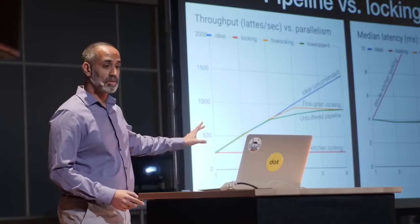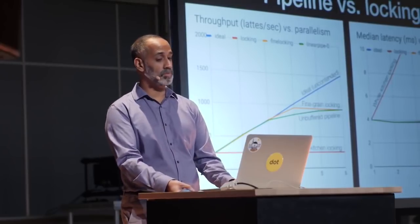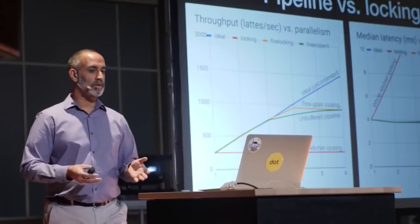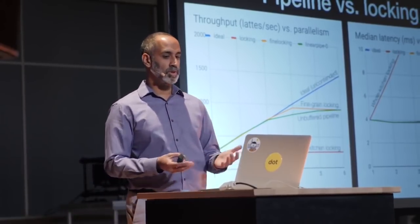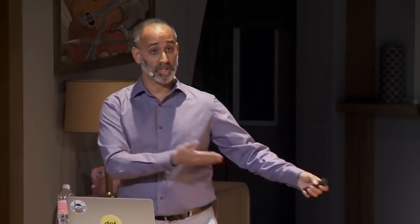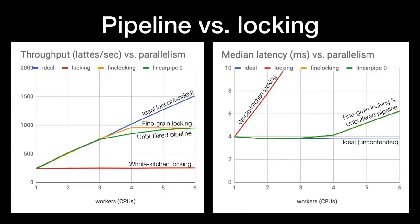Here's the real-world analogy. Consider what happens when the person using the grinder finishes grinding the beans. In the locking implementation, that person steps away from the grinder and someone else can start using it immediately. But in the pipeline implementation, the person grinding the beans has to wait to hand off the grounds to the person making the espresso before they can start the next grind. If the second person is busy, the first person just stands there holding out the grounds — this is a blocked channel send in our implementation, leaving the grinder idle and under-utilizing our resources. In the real world, the person would just set the grounds on the counter and start grinding more beans. That counter space allows different stages of the pipeline to stay busy, even if they're a little out of sync — and we need that flexibility in our computer systems as well.